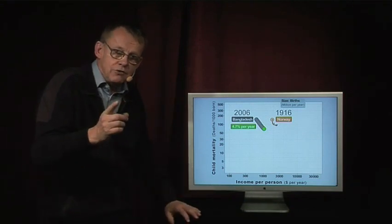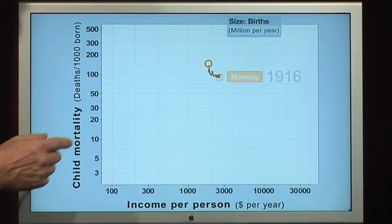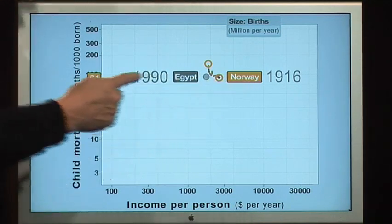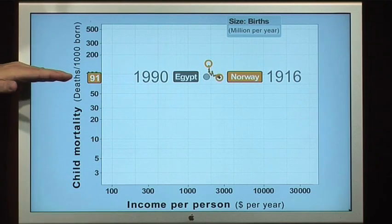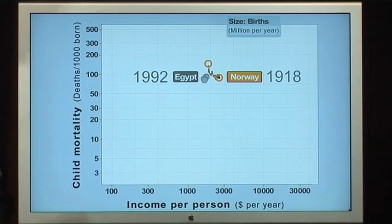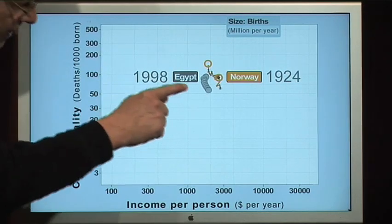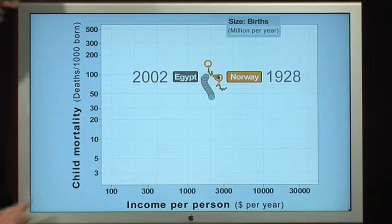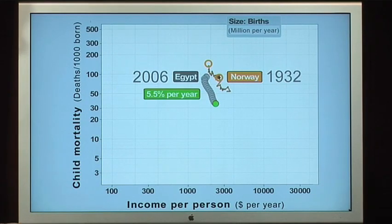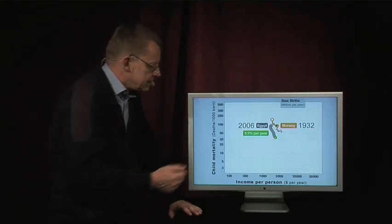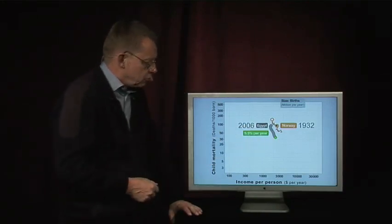I will give Norway one more chance: Norway in 1960 versus Egypt in 1990, the year Millennium Development Goal measurement started. Egypt then had 91 children dying per 1,000. You can see how they go down, with Egypt becoming faster and faster. Egypt achieved an impressive 5.5% reduction — much faster than the Millennium Development Goal rate — and Norway in the past could not follow.